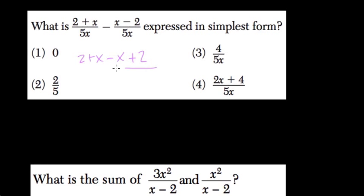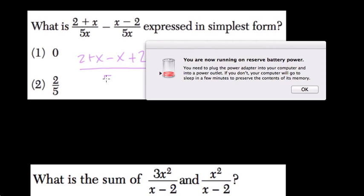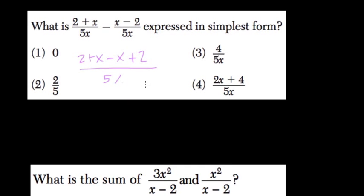Watch those signs there, that usually trip students up. 2 plus x minus x plus 2. Well, it's 4 plus 0, or 4 over 5x. Choice 3.